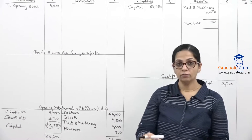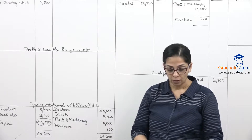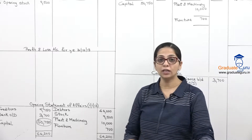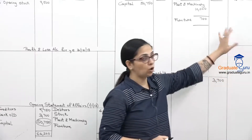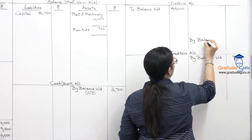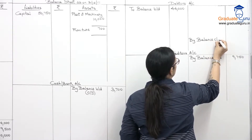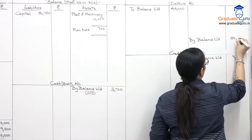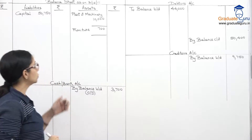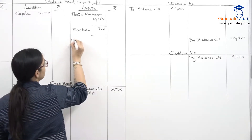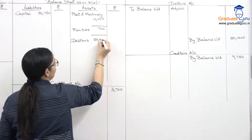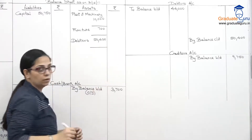Now we move to closing balances. Dators closing balance is 50,400 — recorded in the dators account as balance carried down, and second effect goes to the balance sheet asset side inner column at 50,400, since there is an RDD adjustment.